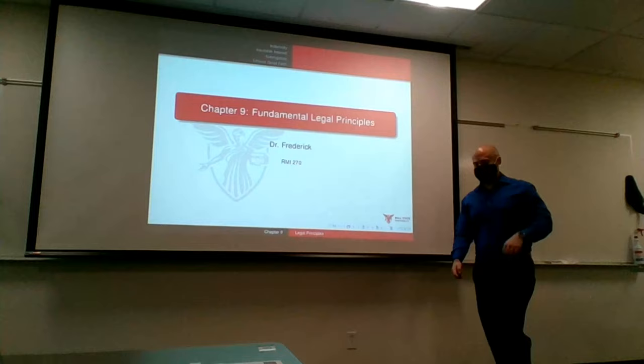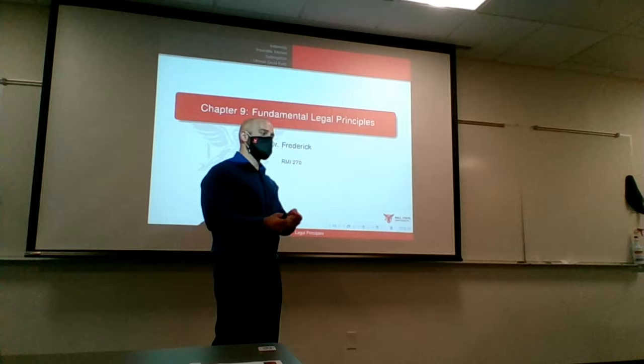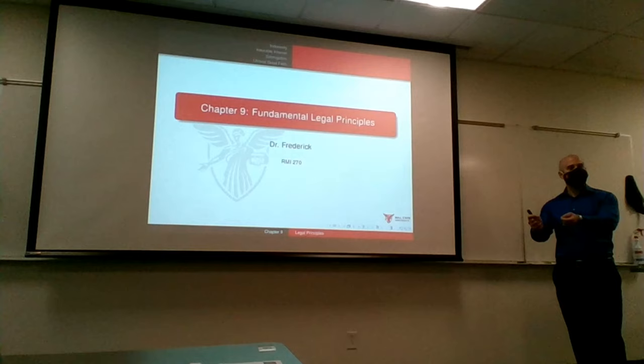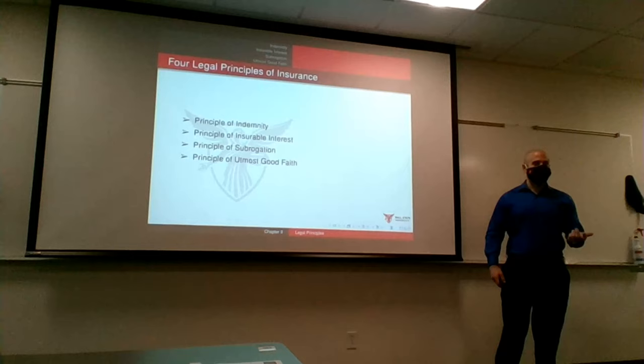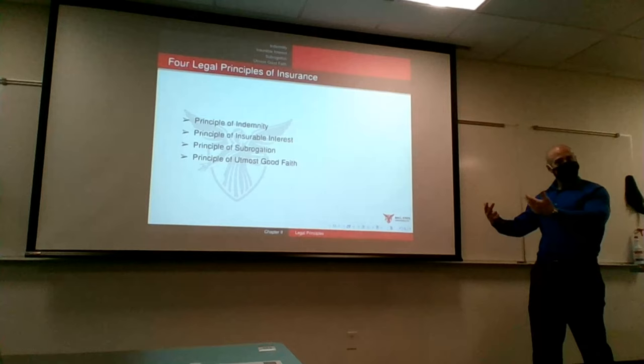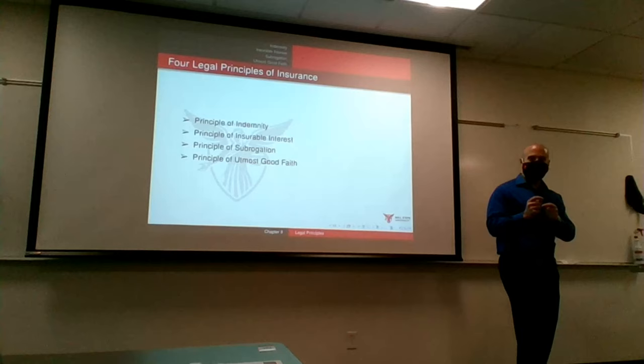In our last chapter we talked about how we regulate the insurance industry. Within that, we said these are pretty complicated legal documents, so it might be good to dive into what makes them complicated and the primary aspects of the legal principles of an insurance contract. Here are the four we're going to go over today, and you might notice you could recognize two, maybe three of these. We've already covered indemnity and we're going to iron out the legal principle of that, but that's not new to us.